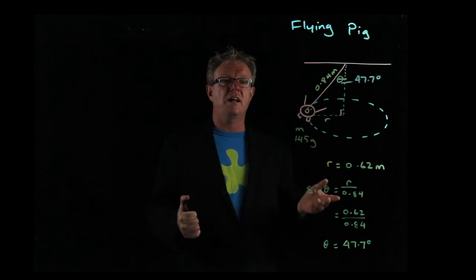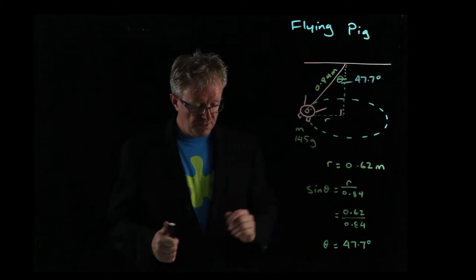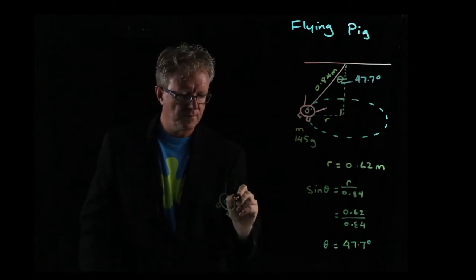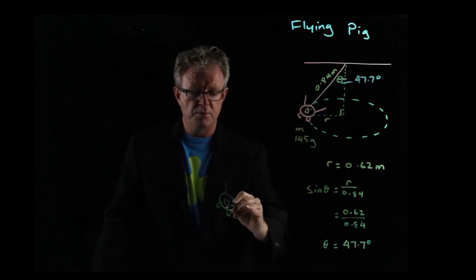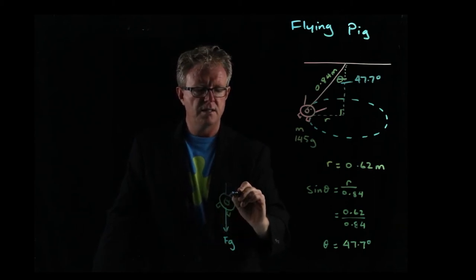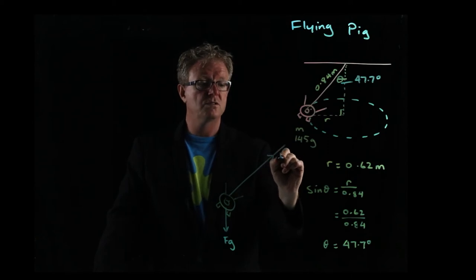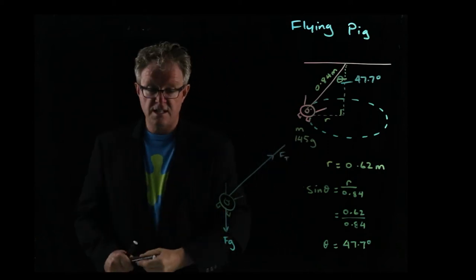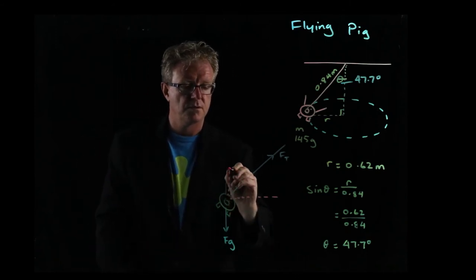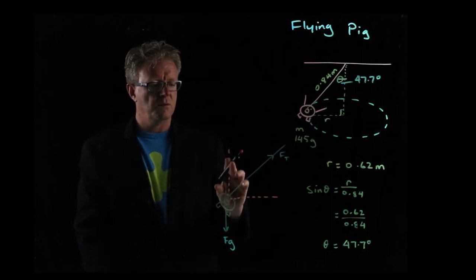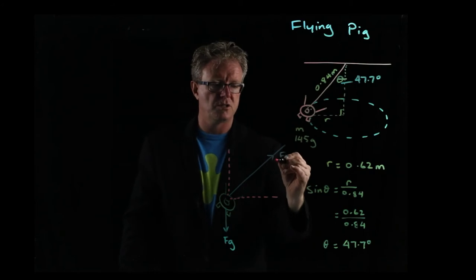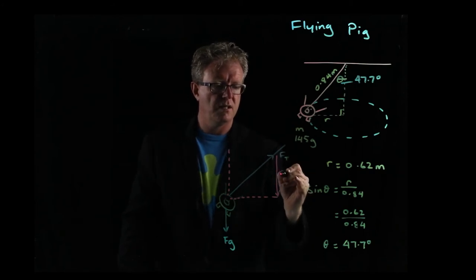Now how does that help us calculate the velocity? Remember that the pig has the pull of gravity acting on it, Fg. It then has the tension force of the string, which has x and y components. The y component is equal to gravity, just in the opposite direction.